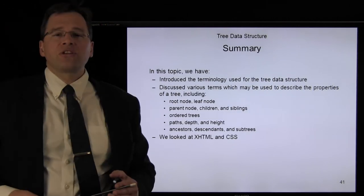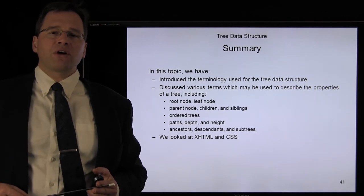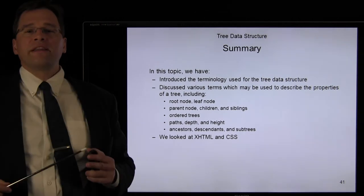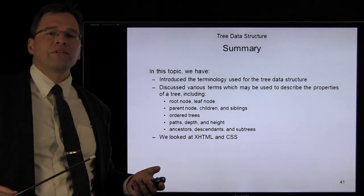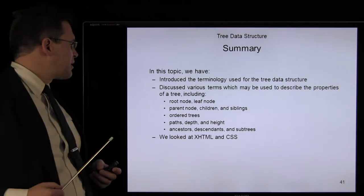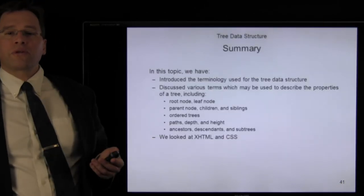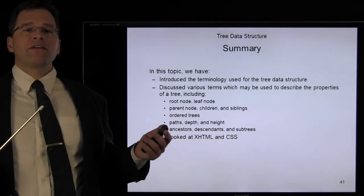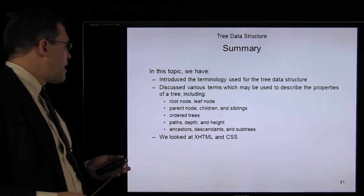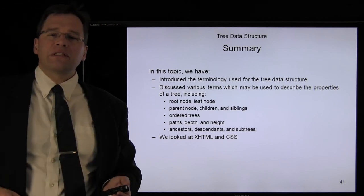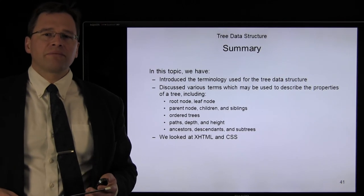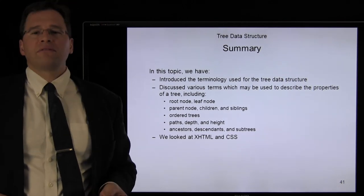So, in this topic, we have introduced the terminology used to describe the tree data structure. We have described various terms, including the root node, leaf nodes, and internal nodes. We have defined parents, children, and siblings as a relationship of a particular node. We have defined ordered trees and unordered trees, paths, path length, the depth of a node within a tree versus the height of a tree being the maximum depth, ancestors, descendants, and subtrees. Finally, we looked at HTML and cascading style sheets. Thank you very much, and have a good day.